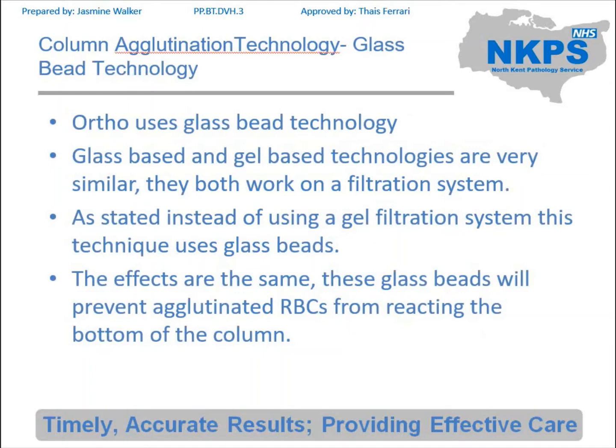Continuing with column agglutination technology, we move into glass bead technology. The main company that uses this is Orpho. Glass beads and the gel-based technologies look pretty much the same. The difference is instead of using a gel there are lots of small glass beads that act as a filter, so again you would end up with a similar result. If there's agglutination the cells won't be able to pass through that glass bead filter; if there's not, they can. These are both very useful techniques that can be performed manually and in an automated fashion and they can do a range of different tests.